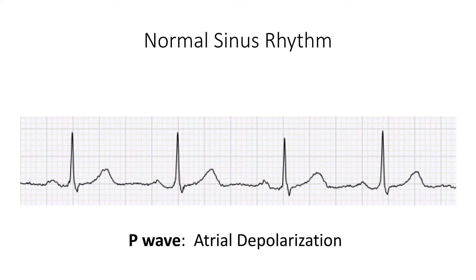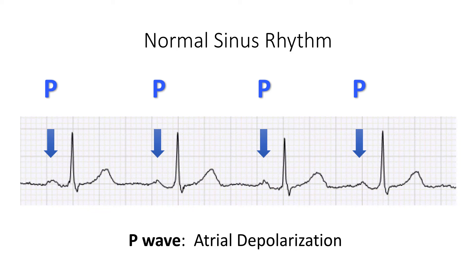What you see in front of you is a single lead electrocardiogram in a patient with normal sinus rhythm. The P-wave is the start of a normal sinus rhythm. The P-wave represents electrical depolarization that emanates from the sinus node and spreads throughout the atria, usually from the right atrium to the left atrium, because the sinoatrial node is in the right atrium. The best leads to visualize a P-wave are lead 2, because it points in the direction of the wave of depolarization of the heart, and lead V1, because V1 is an anterior lead, and the sinoatrial node is an anterior structure.